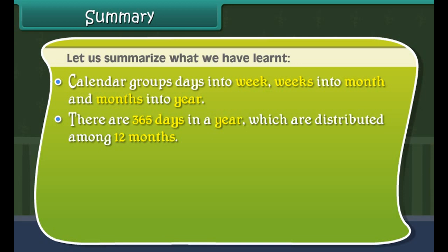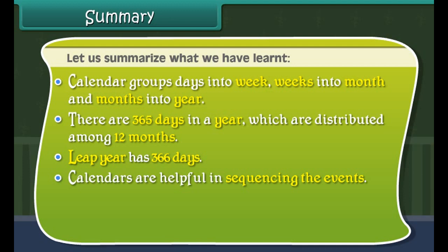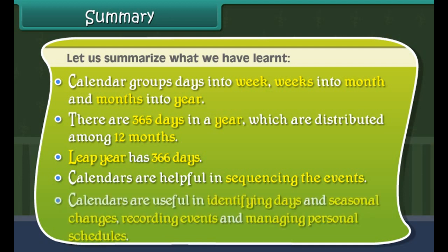Summary. Let us summarize what we have learned. A calendar groups days into weeks, weeks into months and months into year. There are 365 days in a year which are distributed among 12 months. A leap year has 366 days. Calendars are helpful in sequencing events, identifying days and seasonal changes, recording events, and managing personal schedules.